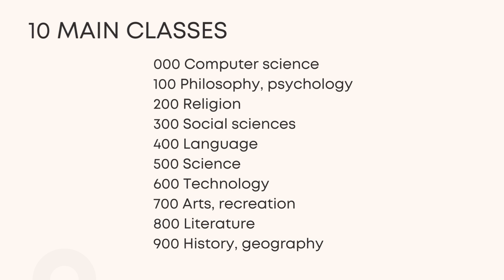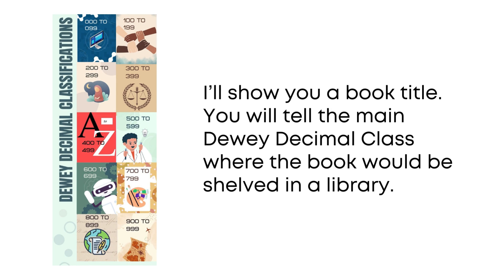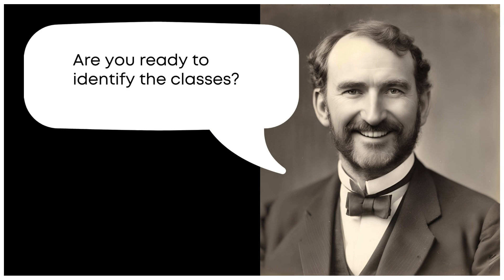Once you have learned the 10 main classes of the Dewey Decimal System, you will be able to find the general area of the book you are looking for quicker and easier. I'll show you a book title. You will tell the main Dewey Decimal class where the book will be shelved in a library. Are you ready to identify the classes?